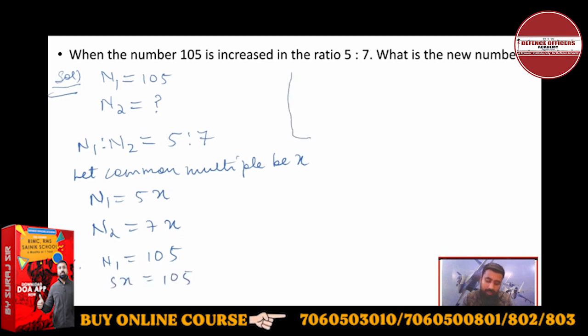Here is my common multiple. x will be 21. 105 divided by 5. Okay?